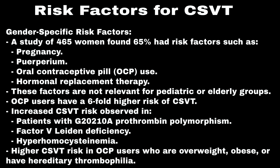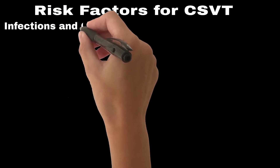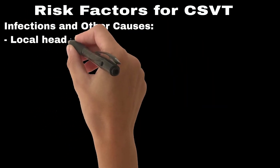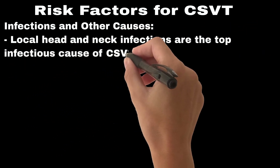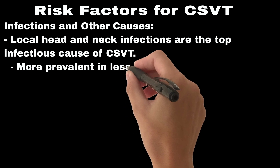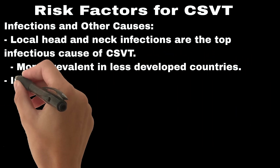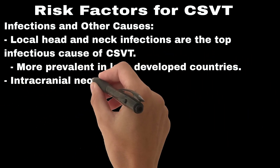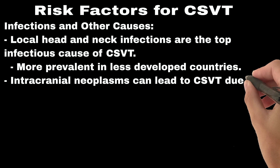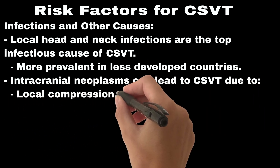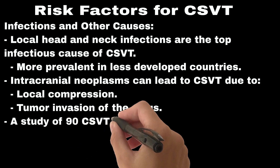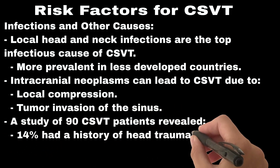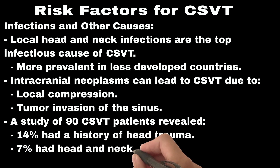Local head and neck infections are the top infectious cause of CSVT and are more prevalent in less developed countries. Intracranial neoplasms can lead to CSVT through local compression or tumor invasion of the sinus. A study of 90 CSVT patients revealed 14% had a history of head trauma, 7% had head and neck infections, and 8% had brain tumors.